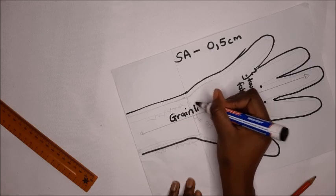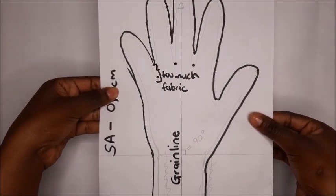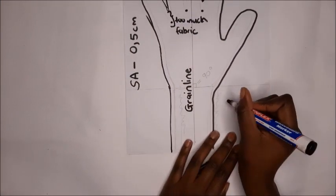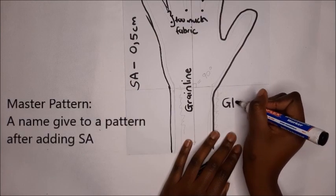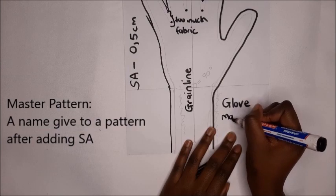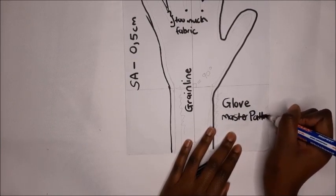This is the complete pattern with seam allowance, it's called a master pattern. I'm going to name it glove master pattern, but I'll give it an acronym, MSGO standing for Musako.